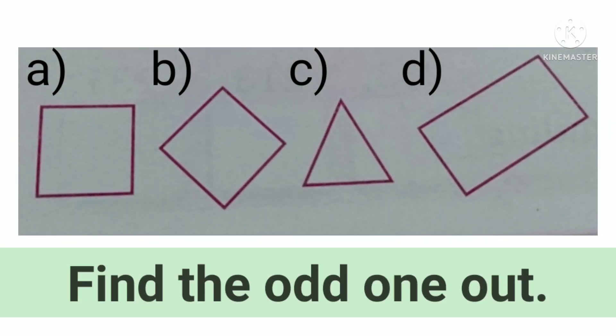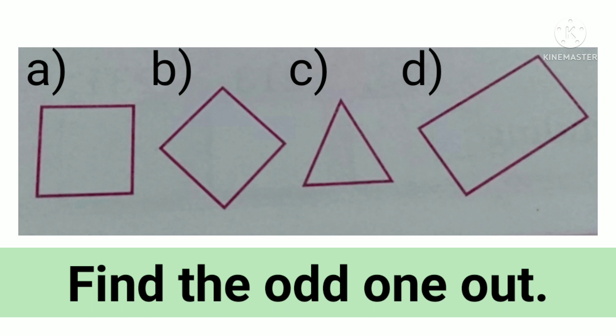Now let us look at number 2. You can see 4 different figures and you have to find the odd one out. That means the one which is different from the other 3.